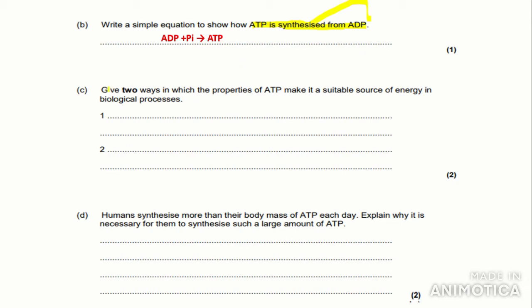The next part: 'Give two ways in which the properties of ATP make it a suitable source of energy in biological processes.' Now you're probably thinking this is the same as the first question, however that question referred to how ATP is useful for the cell as a whole, whereas this question is asking how it is useful for biological processes. A property we could put is that energy is released in small amounts — you don't need to provide an explanation as it is only a 'give' question, not an 'explain' question. And it involves a simple reaction, as it only involves a couple of reactants and products.